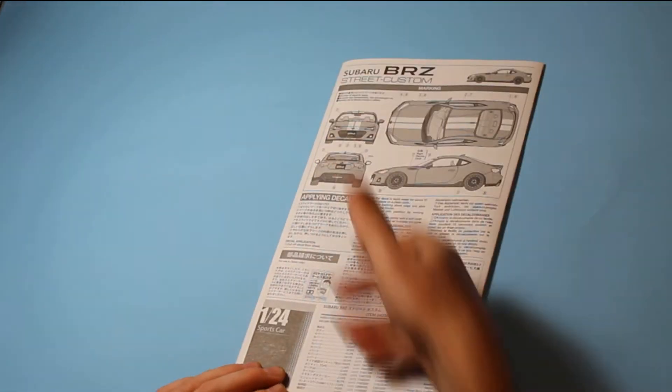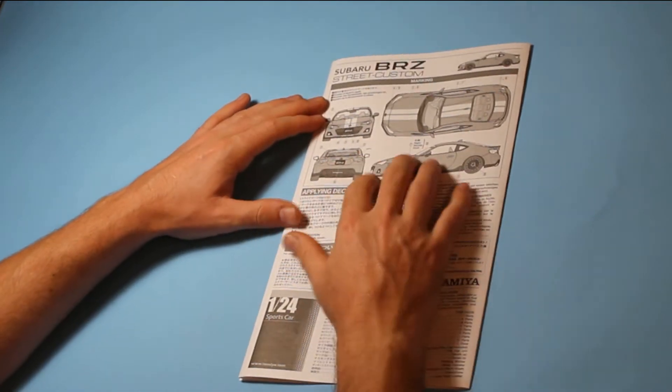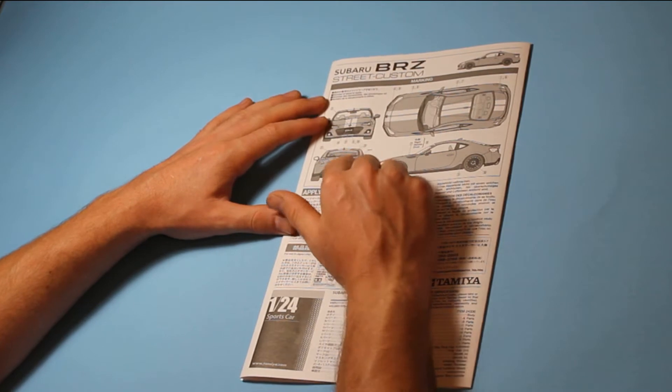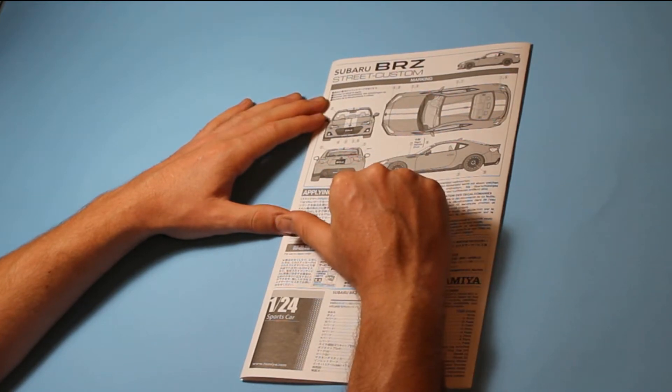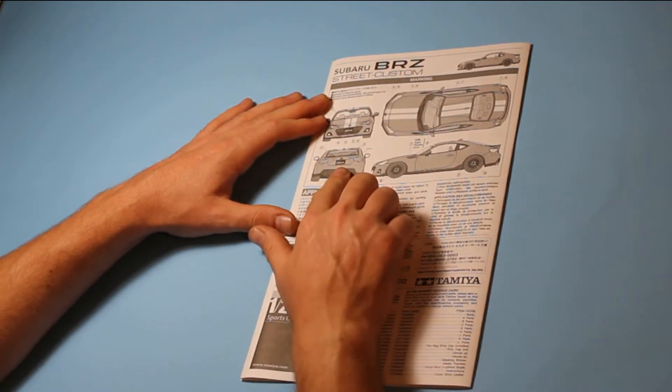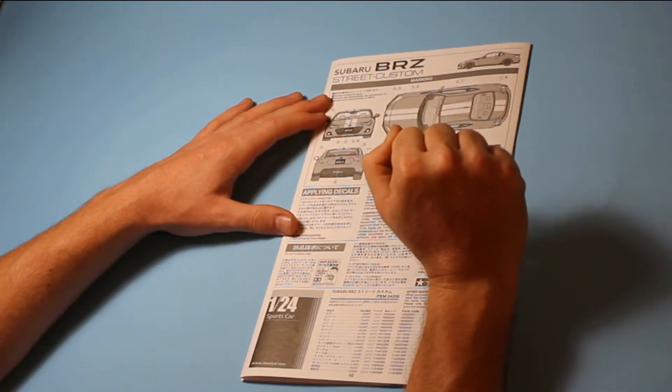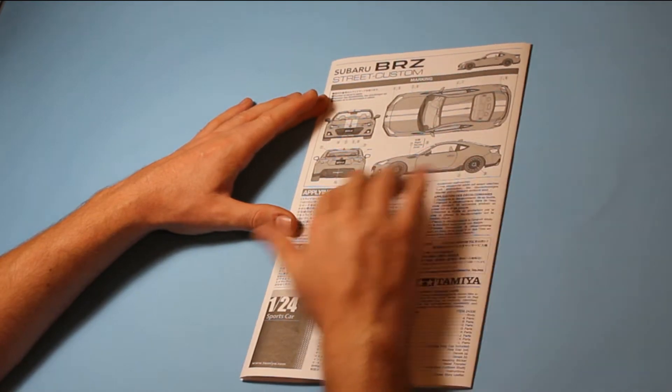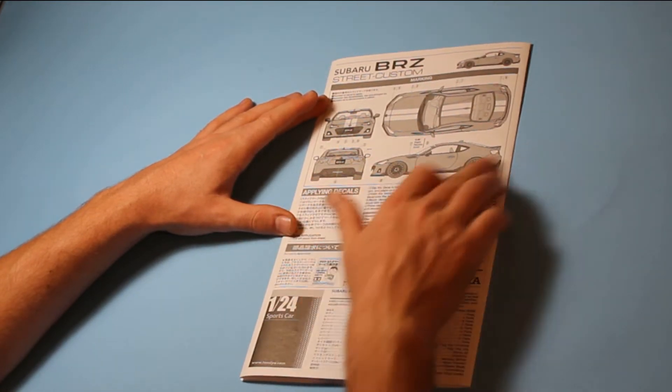Marking options are the same, so you pick your base color and then you've got decals to go on top. If you pick the black color, then you've got white decals to go over the top, and if not, then you can put black stripes across the top as well. There are a few decals here for the number plate and a few other little bits.